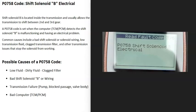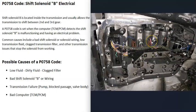Today I'm talking about a P0758 code — what it is and how you go about fixing it. A P0758 code is shift solenoid B electrical. Transmissions can have a lot of solenoids built into them, and one of these solenoids is called shift solenoid B, which usually allows the transmission to shift between second and third gear. The computer is seeing some kind of problem with this solenoid, mainly some kind of electrical issue, so it's going to have to be troubleshot to know why.